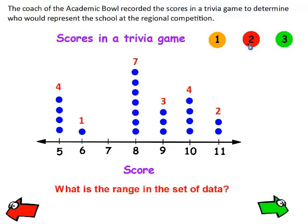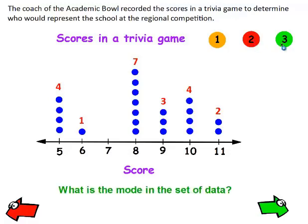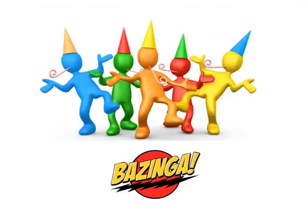What is the range in this set of data? Remember, the range is when you take the largest number, which is 11, and subtract the smallest number, which is 5. The difference is 6, so the range in that set of data is 6. What is the mode in this set of data? The mode is the number that's listed the most, and you can see that the score of 8 was listed more times than all the rest. So the mode in this set of data is 8. Good job.